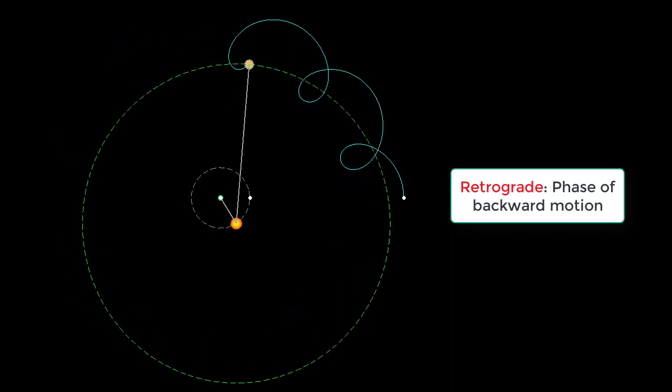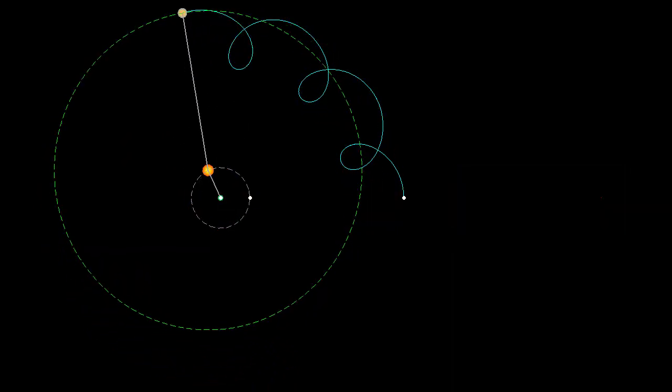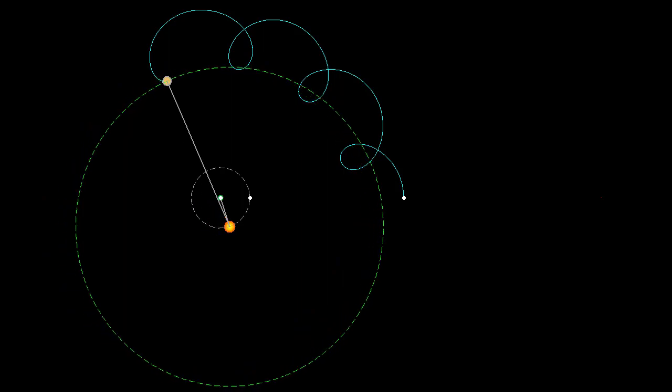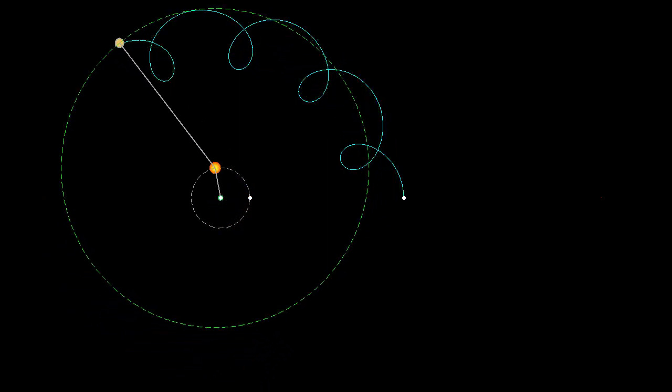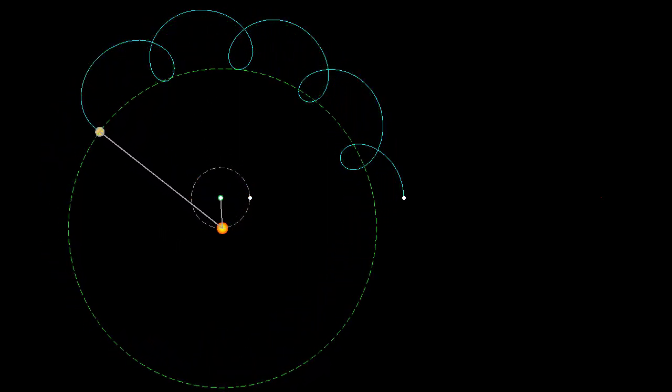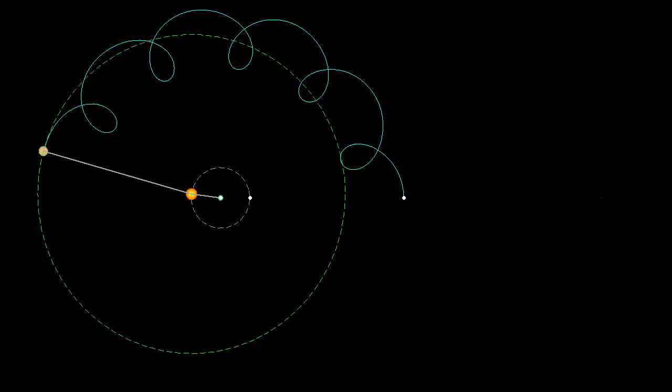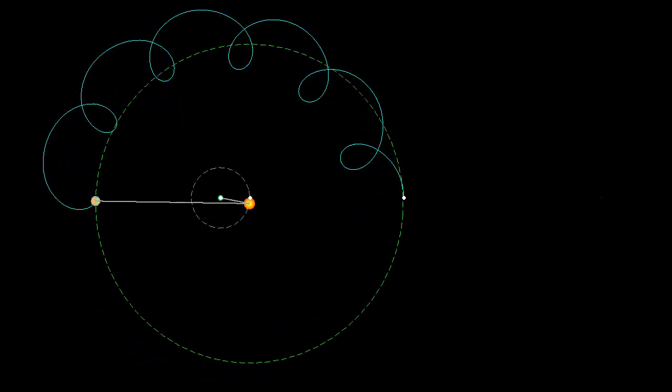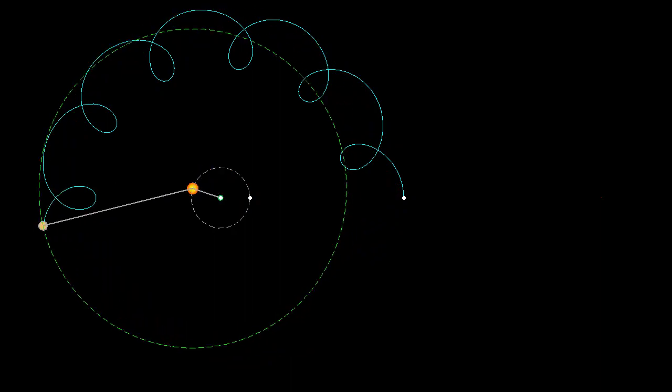The retrograde motion of Jupiter occurs every 13 months and lasts for 4 months. In case of outer planets, the retrograde motion lasts longer because they are slow moving planets. So the earth is moving much faster than them and overtakes them more often.